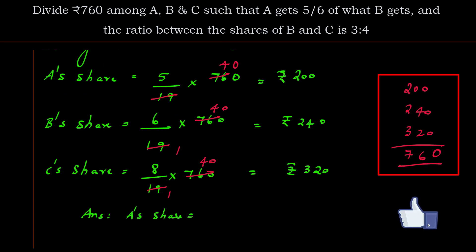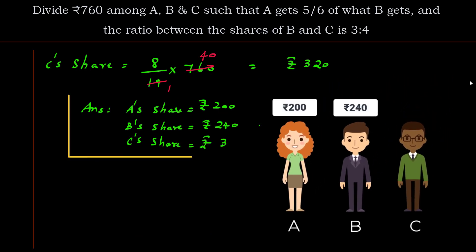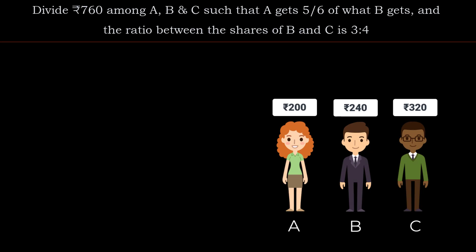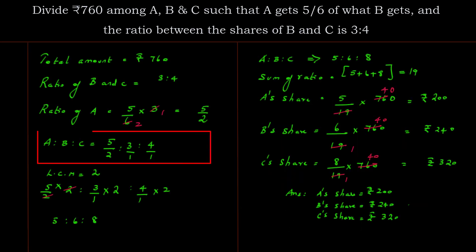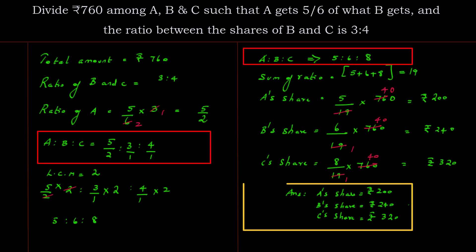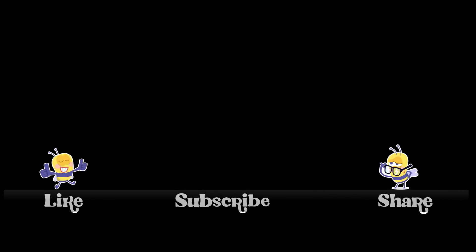A's share = Rs. 200, B's share = Rs. 240, and C's share = Rs. 320. Whenever you have a partial ratio and a clue, frame the complete ratio first, then follow the same steps. Feel free to post comments and queries. Remember, learning never exhausts the mind — keep learning. Please like, share, and subscribe. Have a great day!